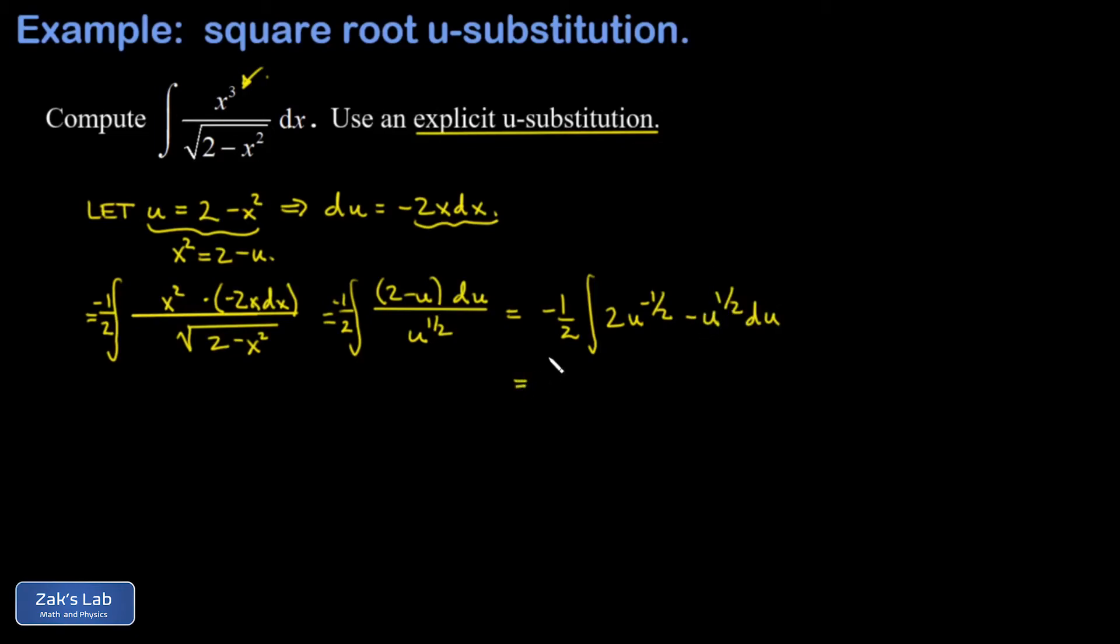These are each power functions where we can just use the power rule for antiderivatives to get the antiderivative. So I have a negative 1 half times, and then the antiderivative of u to the 1 half, you just add one to the exponent and divide by the result. So that's u to the 1 half divided by 1 half. Dividing by 1 half is the same as multiplying by 2. So I have 4u to the 1 half.